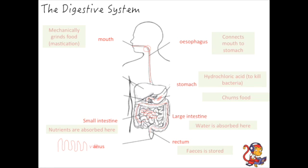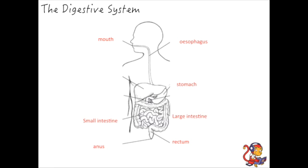So all of those are organs that the food actually travels through involved in digestion. We're now going to move on to a couple of organs that are present in the digestive system but that the food does not travel through, and those are the liver and the gallbladder. They are involved in producing and storing bile — it's the liver that produces the bile and the gallbladder that stores it.